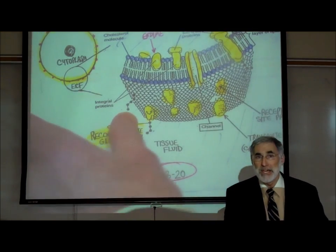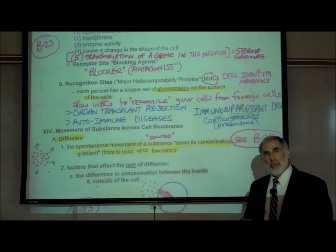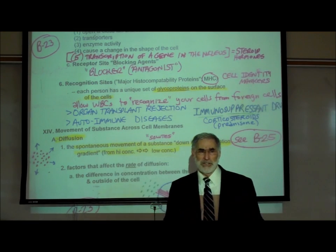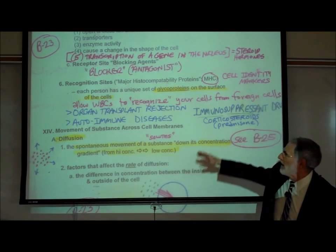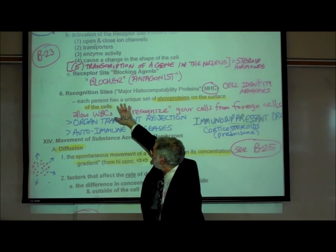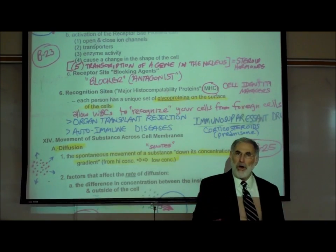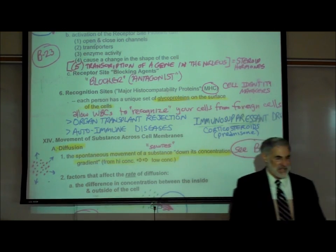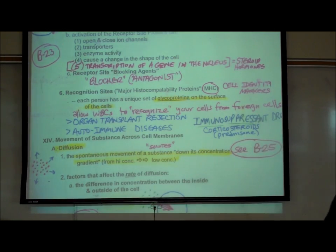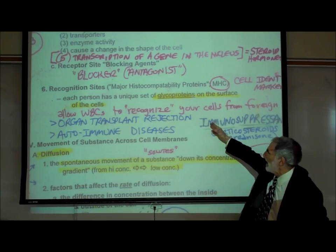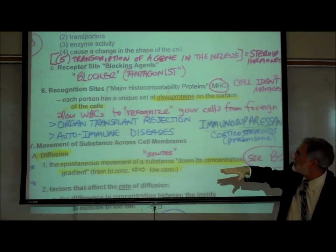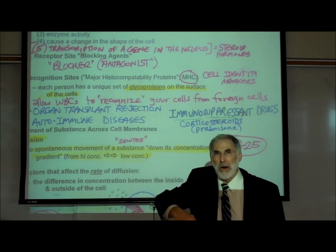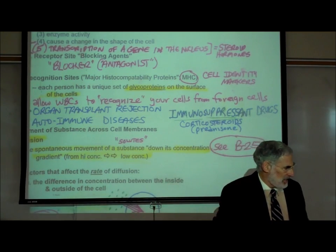Returning to page B23, what is the purpose of this unique set of markers on the outer surface of the body? These recognition sites allow our white blood cells, our immune system, to recognize which cells belong to us and which cells are foreign cells that have entered our body and do not belong.